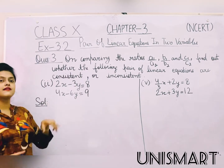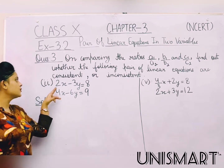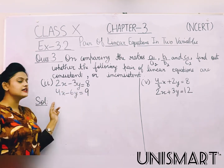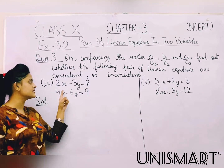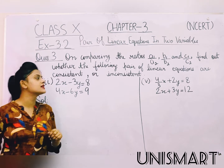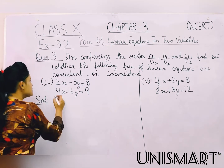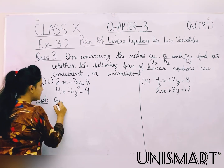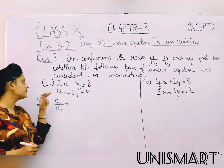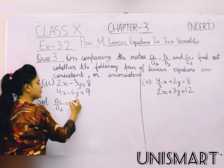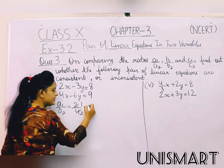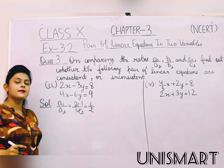Starting question number three, part two. The first linear equation is 2x minus 3y equal to 8, and the second linear equation is 4x minus 6y equal to 9. First, we will find our ratios. So first we find a1 upon a2: a1 is 2 and a2 is 4, so 2 divided by 4, that is 1 by 2.